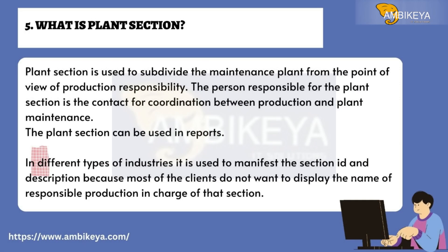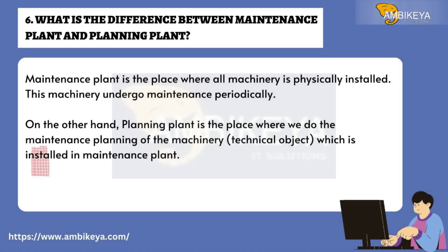Question number five: What is Plant Section? Plant section is used to subdivide the maintenance plant from the point of view of production responsibility. The person responsible for the plant section is the contact for coordination between production and plant maintenance. It is used in reports across different industries to display the section ID and description, as most clients do not want to display the name of the responsible production in-charge.